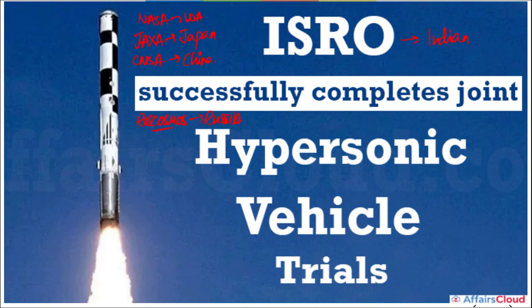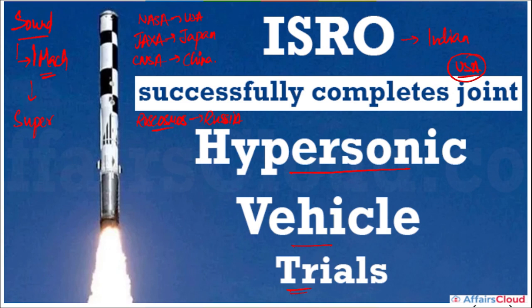The USA also launched a jet with hypersonic speed. When an object travels at the speed of sound, it is traveling at Mach 1. Traveling faster than Mach 1 is called supersonic. When an aircraft or object travels at more than Mach 5, that is called hypersonic.